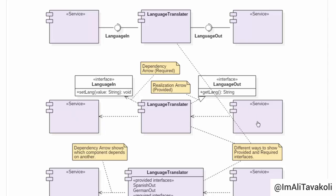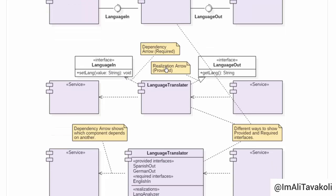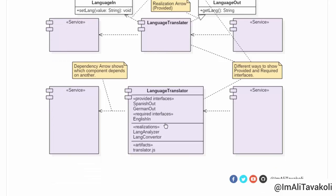The second way to show interfaces is by connecting components together via the dependency arrow. This service is dependent on the language translator, and the language translator is dependent on this other service. The provided interface of the language translator is shown by the realization arrow, and the required interface is shown by the dependency arrow.